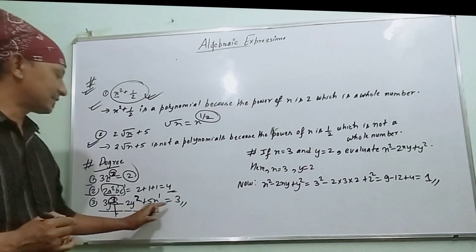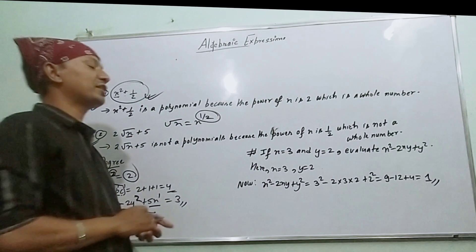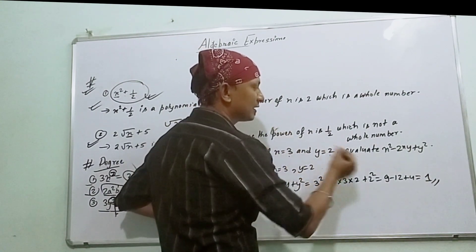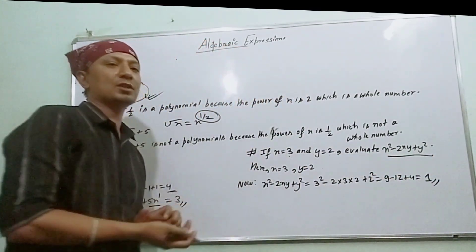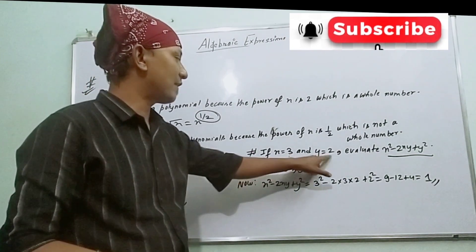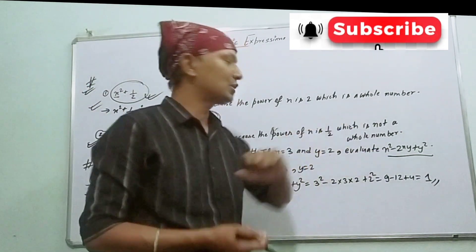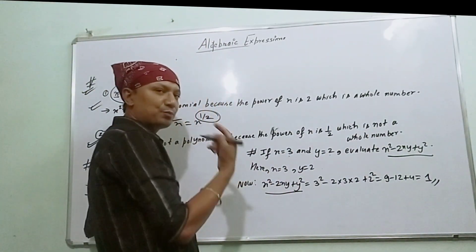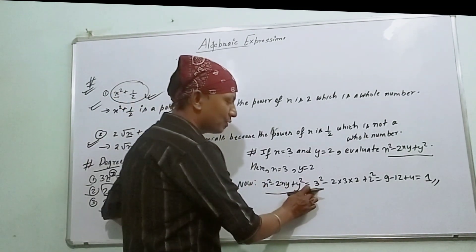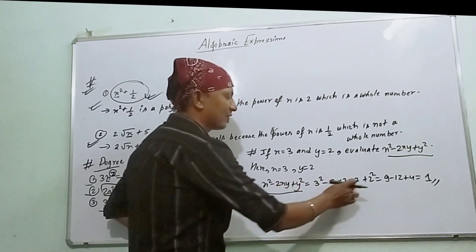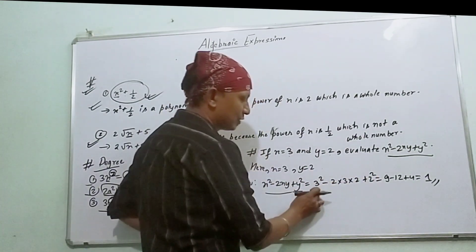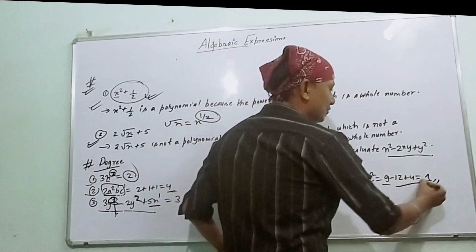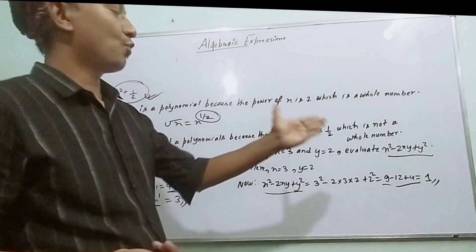Question one is evaluation. Given x = 3 and y = 2, evaluate x² - 2xy + y². Put the values: 3² - 2(3)(2) + 2². This equals 9 - 2(3)(2) + 4, which equals 9 - 12 + 4 = 1.